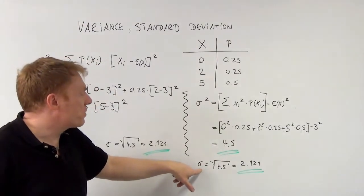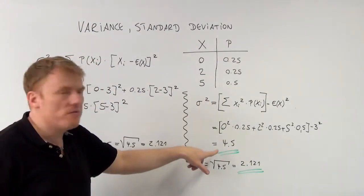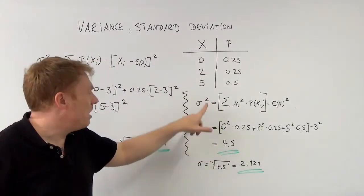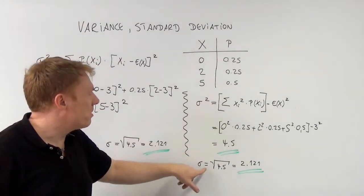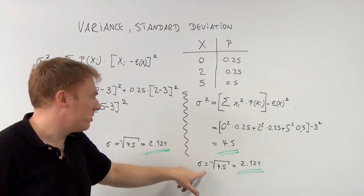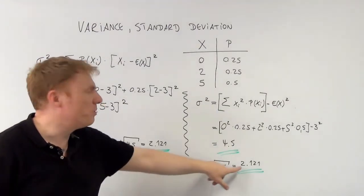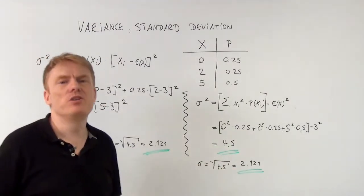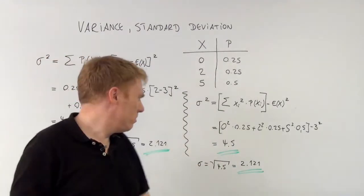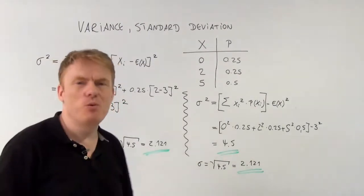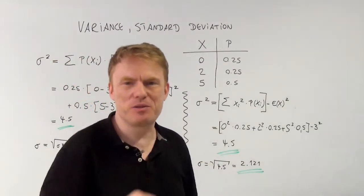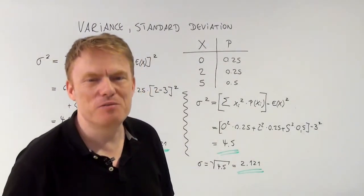And of course, since the variances are the same, so are the standard deviations. The standard deviation again is 2.121. That's it for now. Thank you for watching.